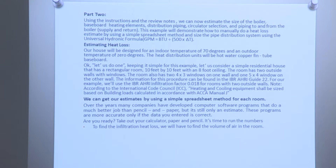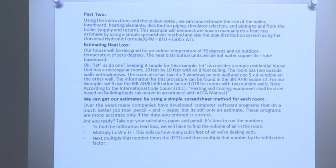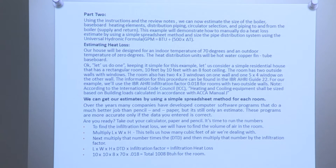To find the infiltration heat loss, we first find the volume of air in the room: multiply length times width times height. This tells us how many cubic feet of air we're dealing with. Next, multiply that number by the design temperature difference and then multiply by the infiltration factor. The formula is: L times W times H times DDT times infiltration factor equals infiltration heat loss. Using our numbers: 10 times 10 times 8 times 70 times 0.018 equals 1,008 BTUs of heat loss for the room.